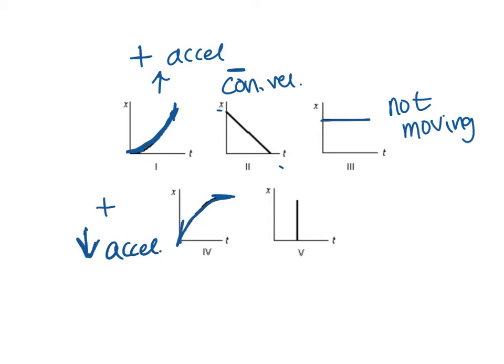This last graph has a vertical line, and that's because vertical lines on position graphs don't exist. This graph is here just to trick you, just like you could see on an ACT or SAT test — there's always an answer choice there to throw you off that's a fake answer. You'll never see that vertical line.